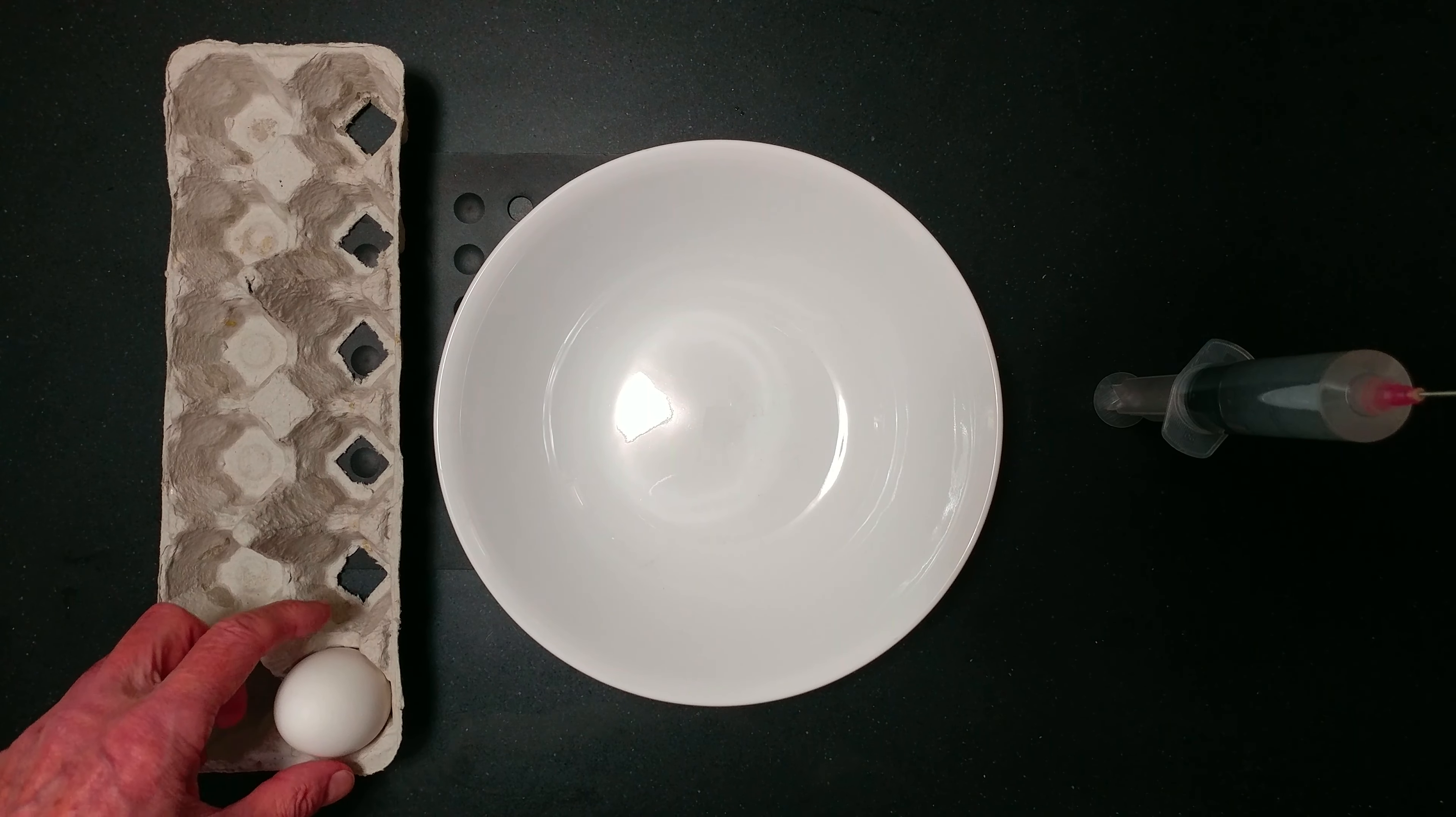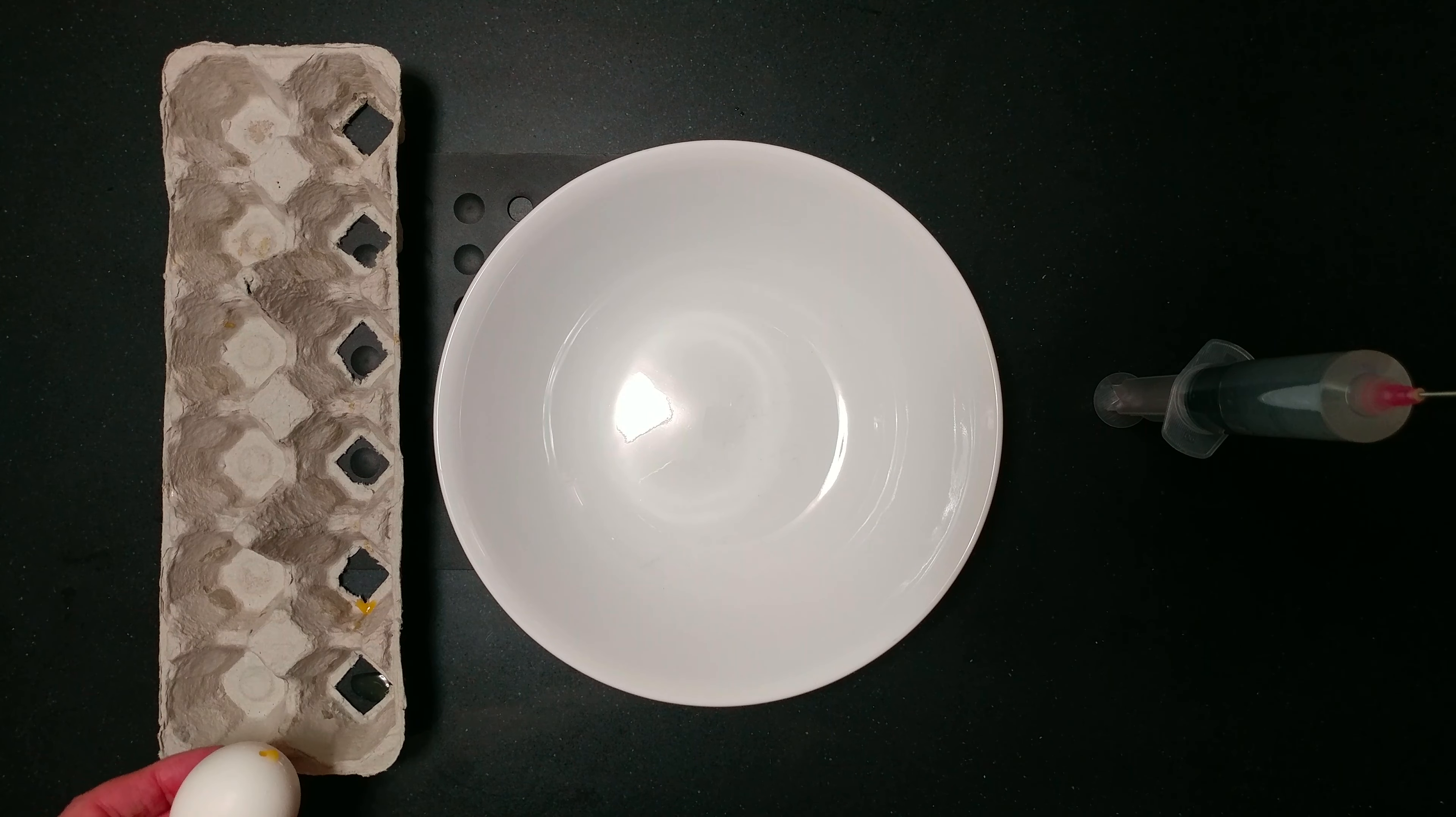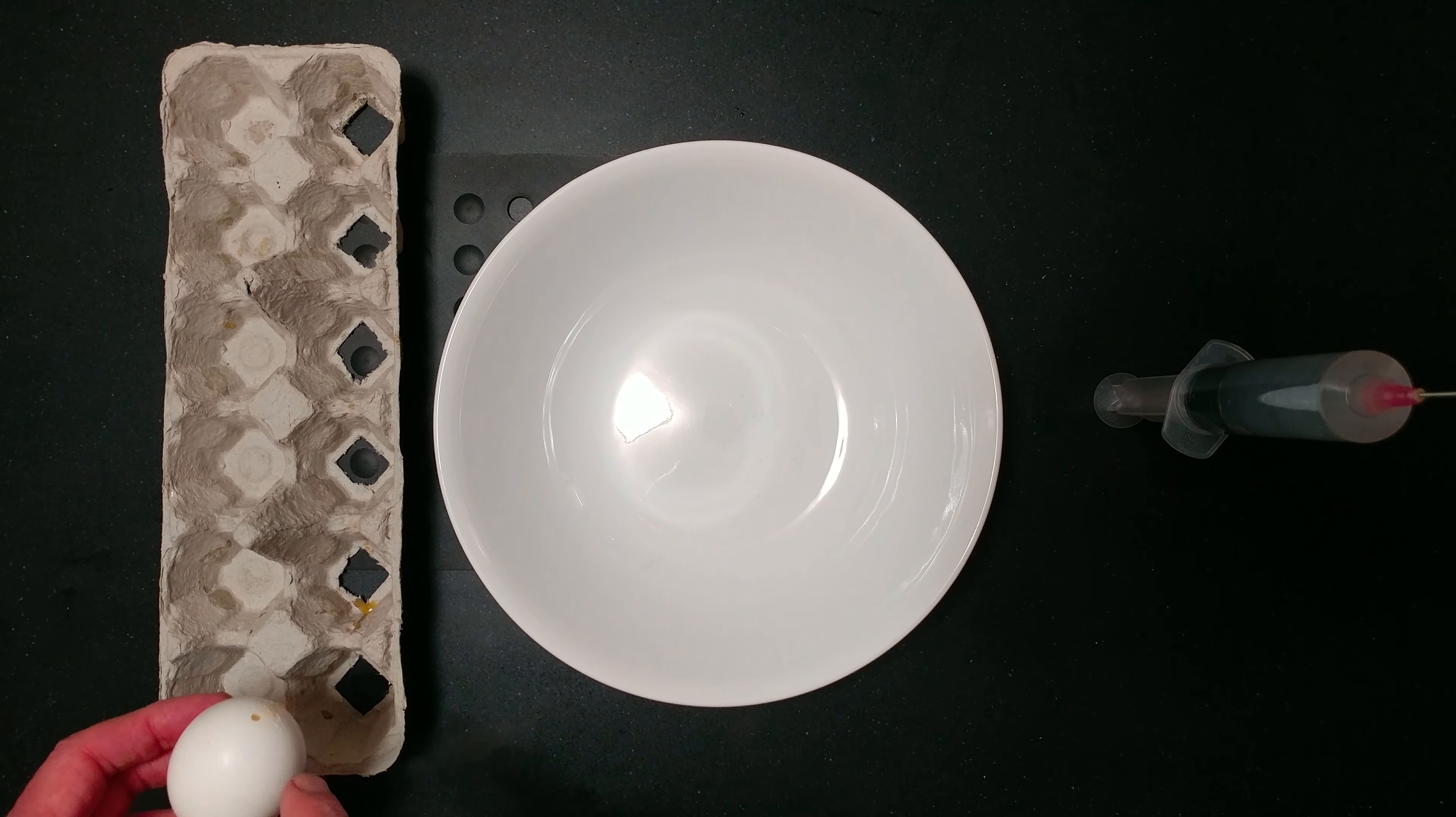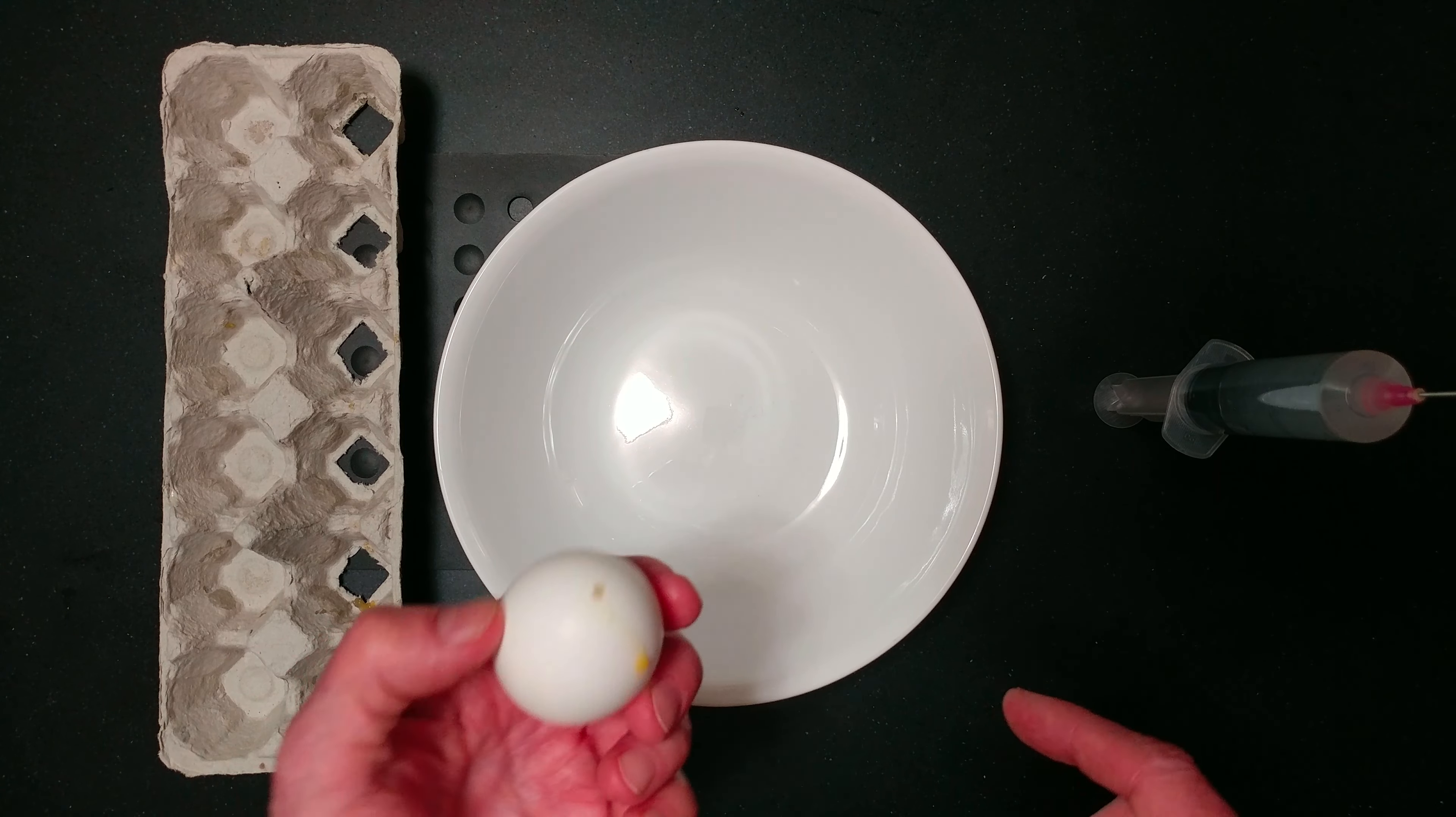After I've removed all the eggs from inside the shell, I put it in the sink. One of these I modified and the egg keeps leaking out.